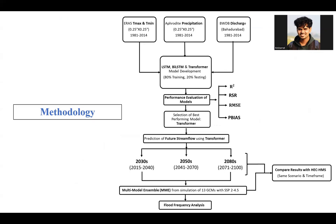This diagram shows the overall methodology. Initially, historical precipitation, temperature, and discharge data are collected and used for development of LSTM, BiLSTM, and transformer models using 80% data for training and the remaining 20% for testing. Performance is determined through R-squared, RMSE, and PBIAS. From the analysis, the transformer was selected as the best performer. Future streamflow is then predicted using the transformer model with CMIP6 future data of precipitation, maximum temperature, and minimum temperature under six climate scenarios and a multi-model ensemble scenario for the time periods of 2030s, 2050s, and 2080s. Finally, these results are compared with the existing HEC-HMS model.